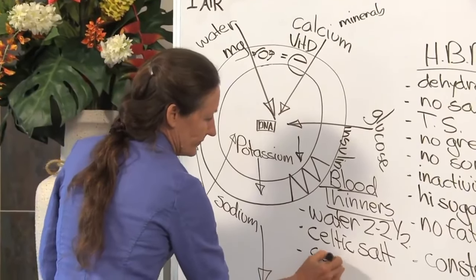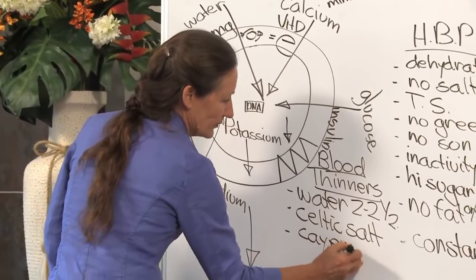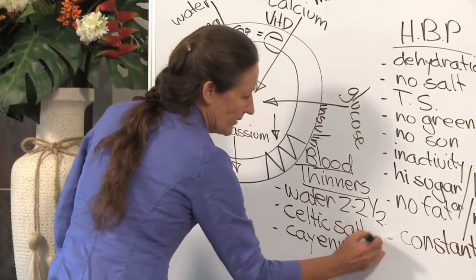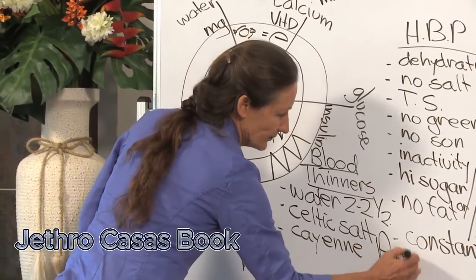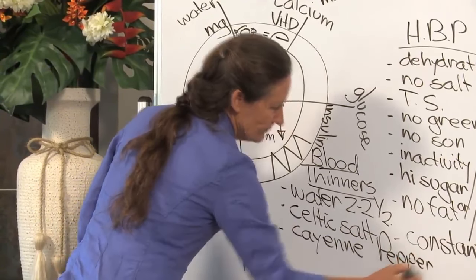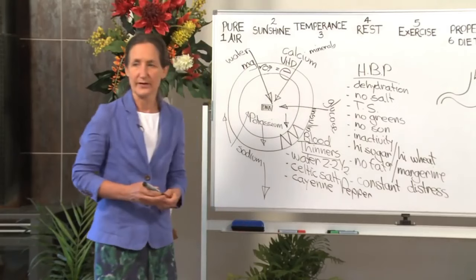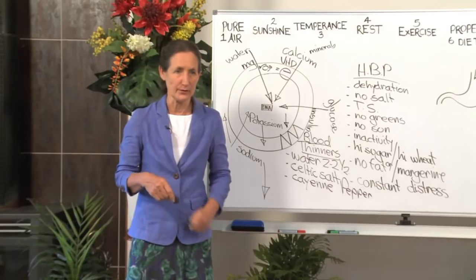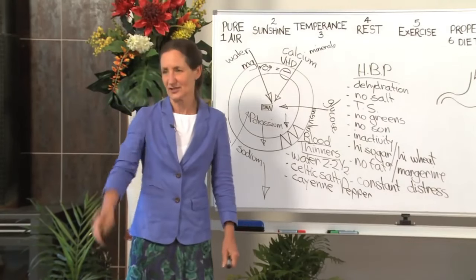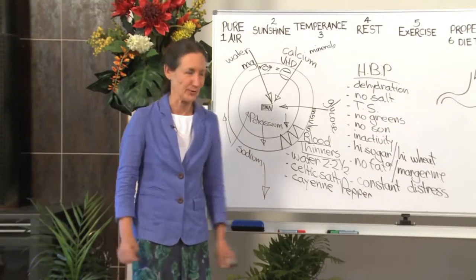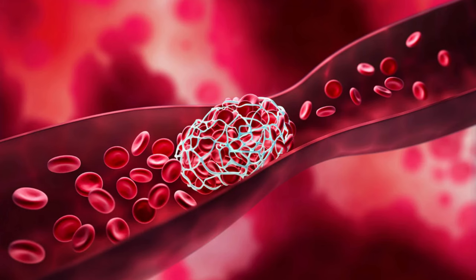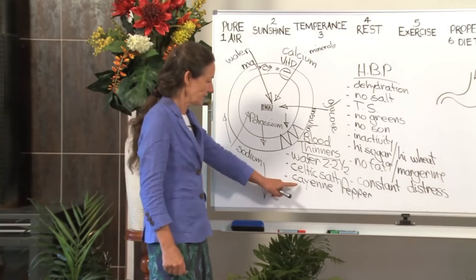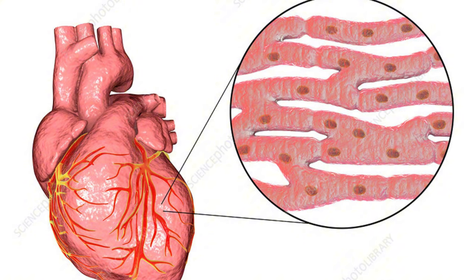Cayenne pepper. Cayenne pepper is a remarkable herb. You might be familiar with Jethro Kloss's book Back to Eden. Jethro Kloss devotes half a page to every herb. Ten pages to cayenne pepper. A remarkable herb. A fantastic blood thinner. It is known to strengthen arterial walls. It's even known to repair heart muscle.